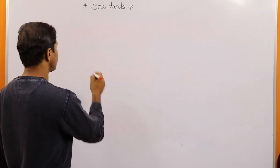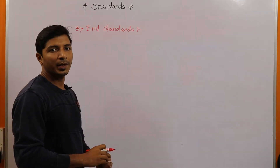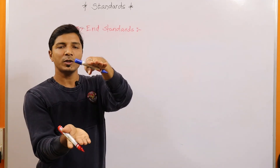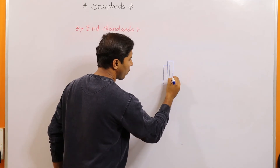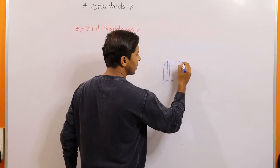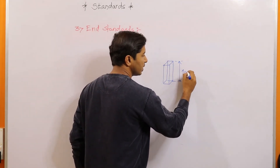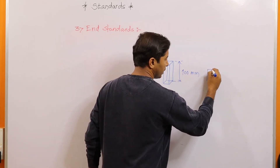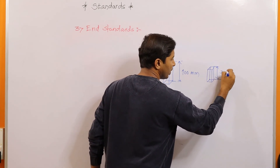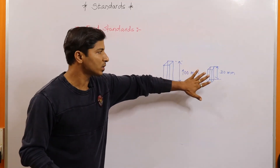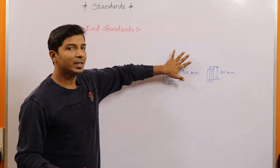Moving to the third category of standards: end standards. These standards are also used to measure length, but instead of using engraved lines, blocks or rods are manufactured with a fixed distance between two faces. These blocks are manufactured with the distance set using secondary and primary standards, so this distance is a standard distance — say 100 mm. There will be different-sized blocks; for example, the distance between two faces may be 30 mm. Hundreds of blocks are manufactured with standard distances specified by primary or secondary standards, and we can use these blocks for measurement purposes.